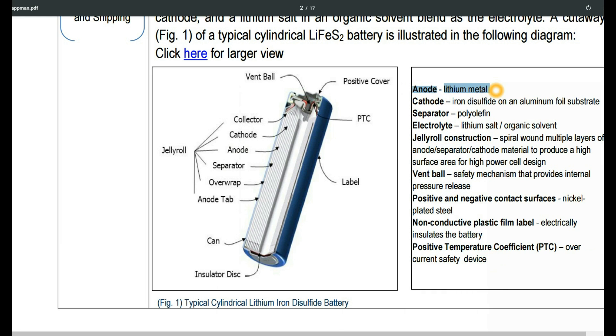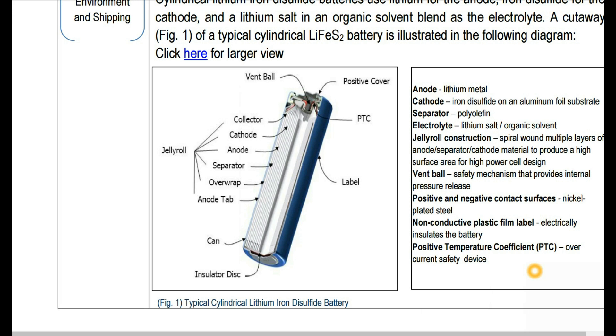So the anode is lithium metal which is what I'm after. The cathode is the iron disulfide on an aluminum foil substrate so that pretty much confirms that there is indeed aluminum in here and they have a separator of some sort of plastic and an electrolyte and it's got some information about the construction of the actual jelly roll and then some of the other features of the battery. So I'll put a link to this pdf in the description as well if you'd like to read the whole thing. Like I said I think it's very interesting so check that out after the video.